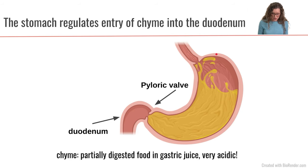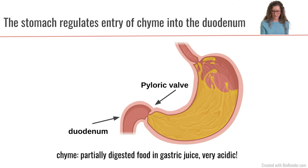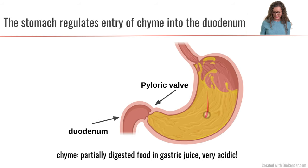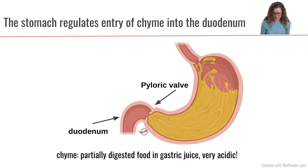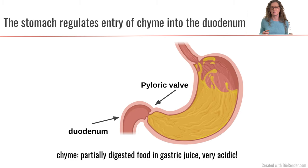The stomach is a temporary storage site for food that has entered our gastrointestinal tract. We started with a food bolus created in our mouth and swallowed down our esophagus. Now that food bolus has mixed with the gastric juice in this acidic, fluid environment — we call it chyme. The stomach regulates the entry of chyme into the first part of the small intestine, called the duodenum, through a structure called the pyloric valve, which divides the stomach from the duodenum.